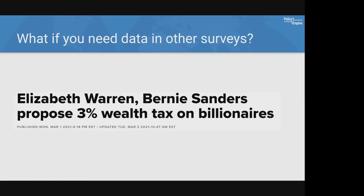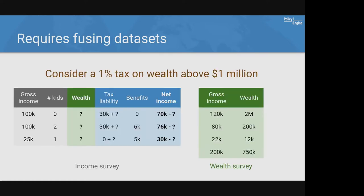A lot of widely used survey datasets don't include wealth. For illustration, consider a 1% wealth tax on wealth over one million dollars. You might have your core household income survey and a separate wealth survey with characteristics you can map onto the income survey. The task is to use information in the wealth survey to estimate wealth in the income survey, and from that calculate the tax liability including the wealth tax. This is generally referred to as data fusion or imputation.